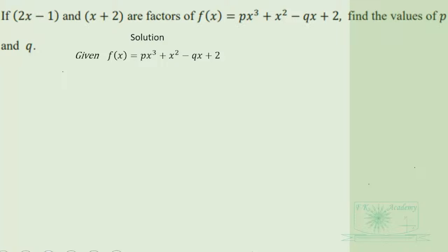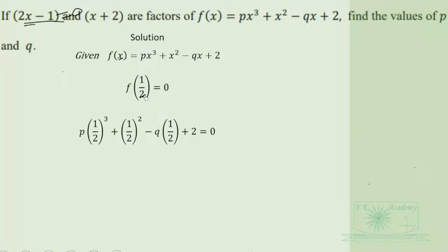Since 2x minus 1 is a factor, f of 1/2 should equal 0. To get 1/2, we equate 2x minus 1 to 0 and solve for x. So wherever we see x in the function, we substitute 1/2, and that is what we are computing here.